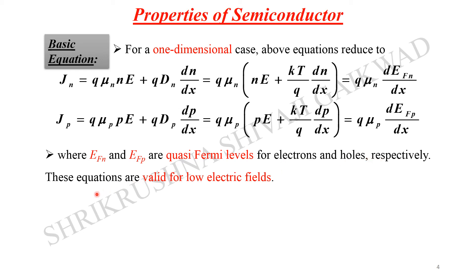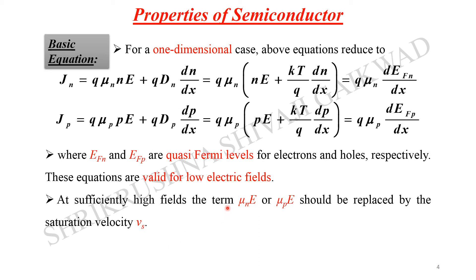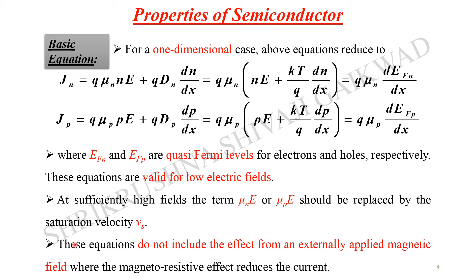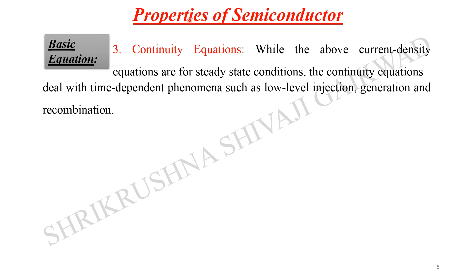These equations are valid for low-level electric fields only. At sufficiently high fields, the mobility terms mu_n·E or mu_p·E should be replaced by saturation velocities, because carriers acquire the highest saturation velocity. These equations also do not include the effect of an externally applied magnetic field, because the magnetoresistance effect reduces the current.